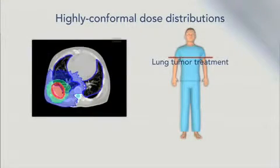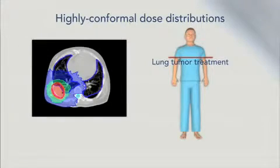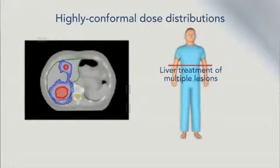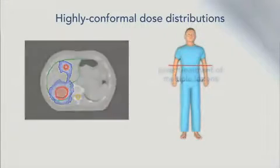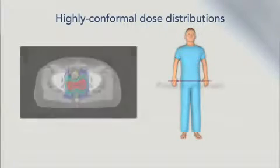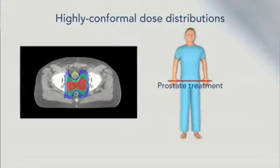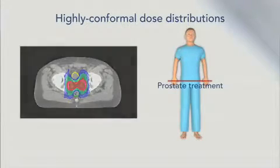Here, a tumor in the pleura surrounding the lung is covered by a highly focused dose distribution that steers sharply away from the cord. Two or more tumors can also be treated simultaneously with tomotherapy. Treatment of the prostate and seminal vesicles, while keeping dose away from the adjacent bladder and rectum, is another challenge met by tomotherapy.